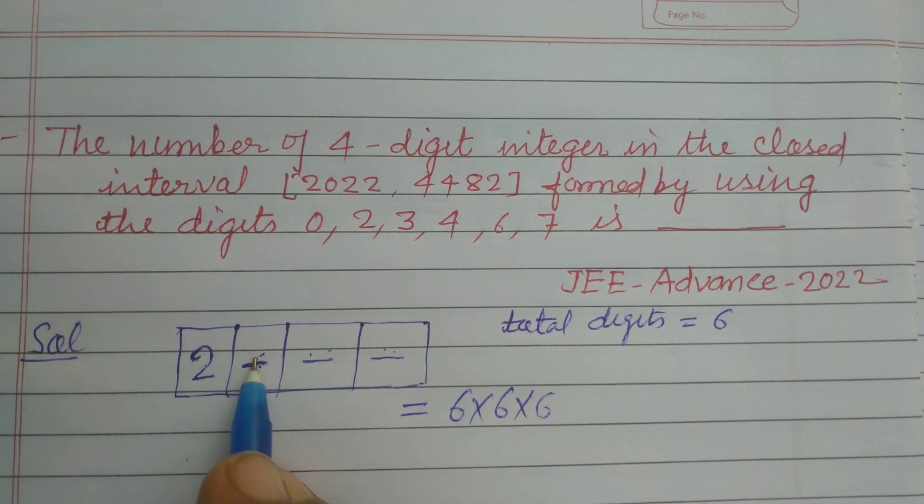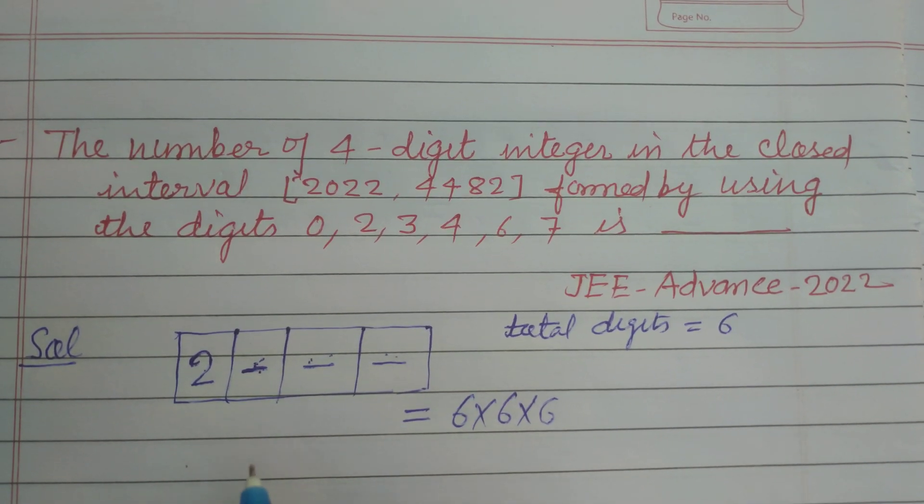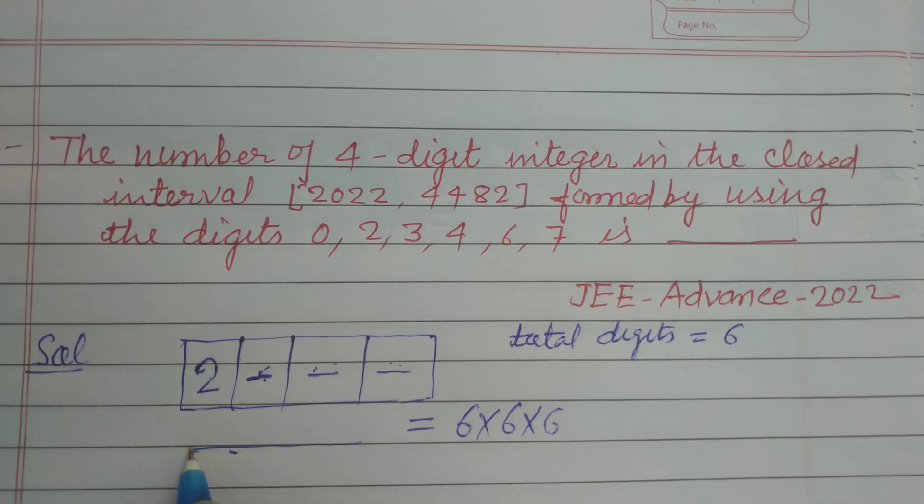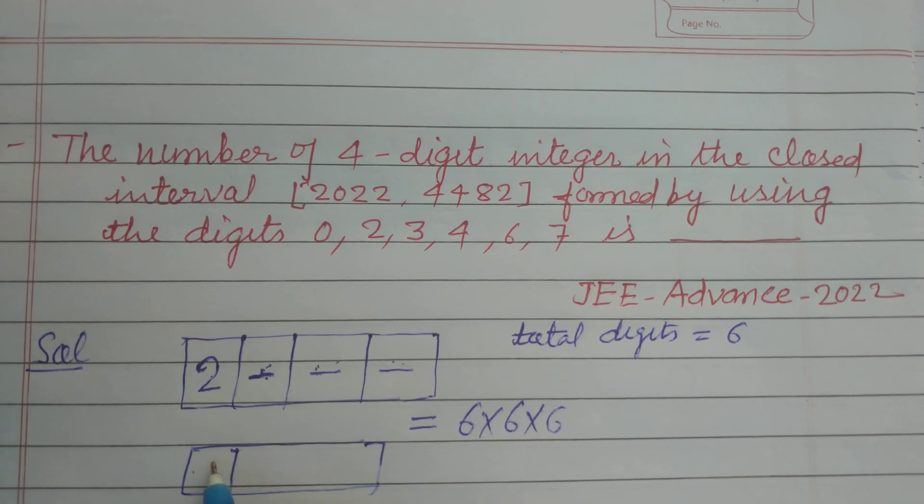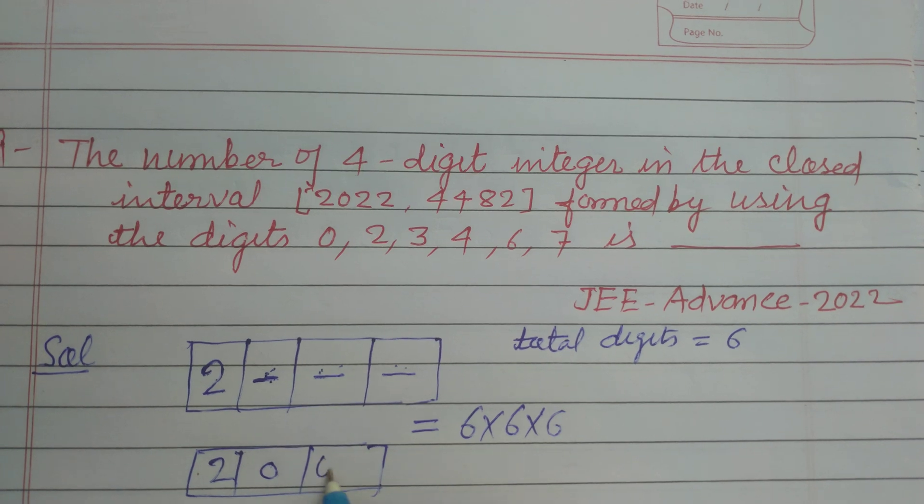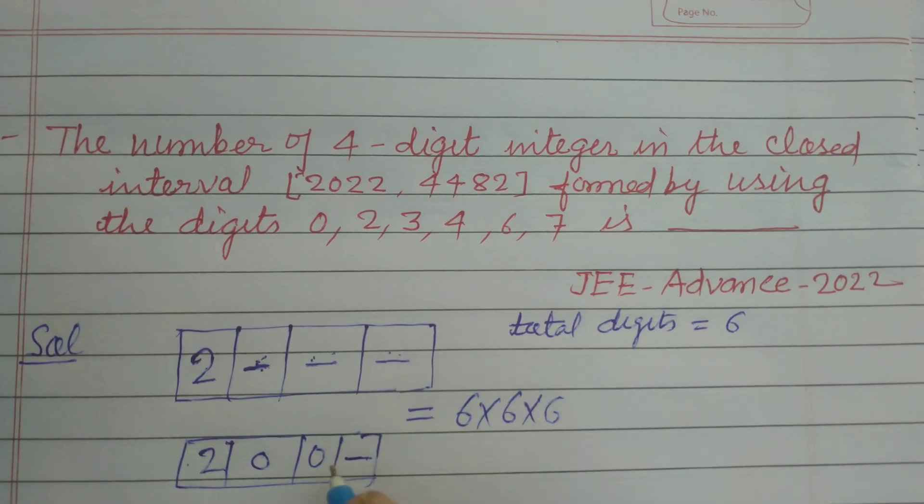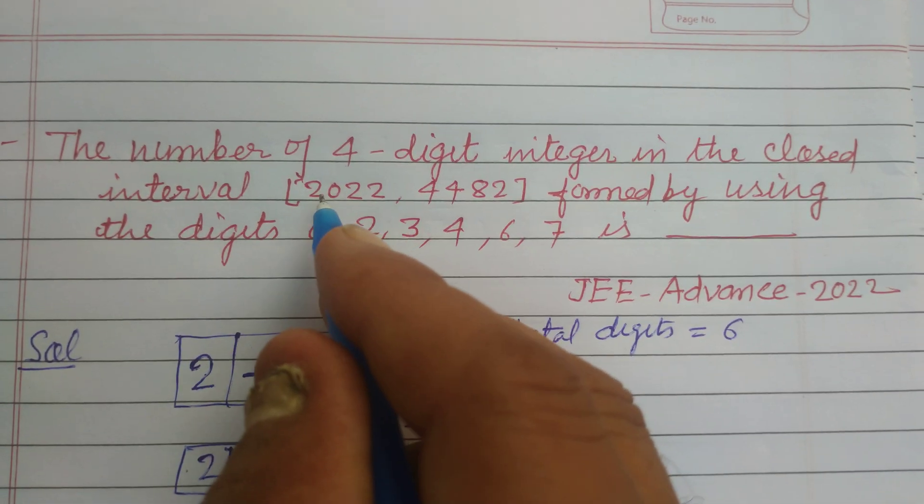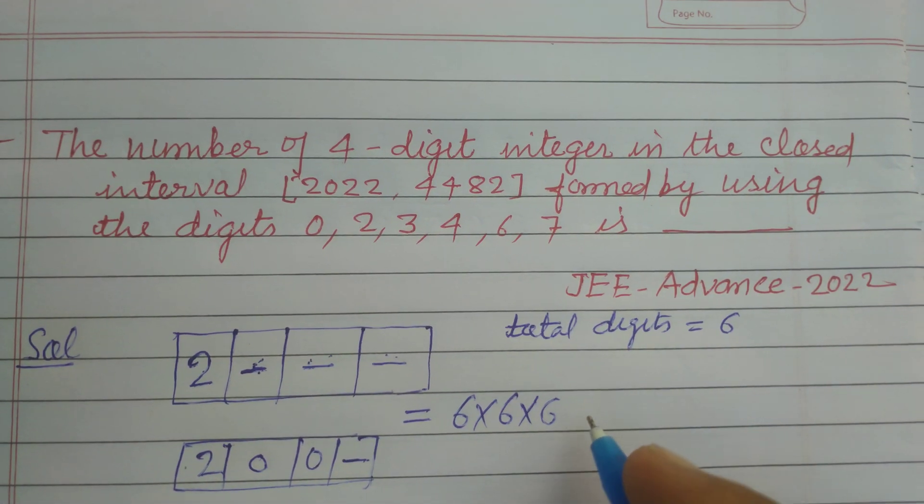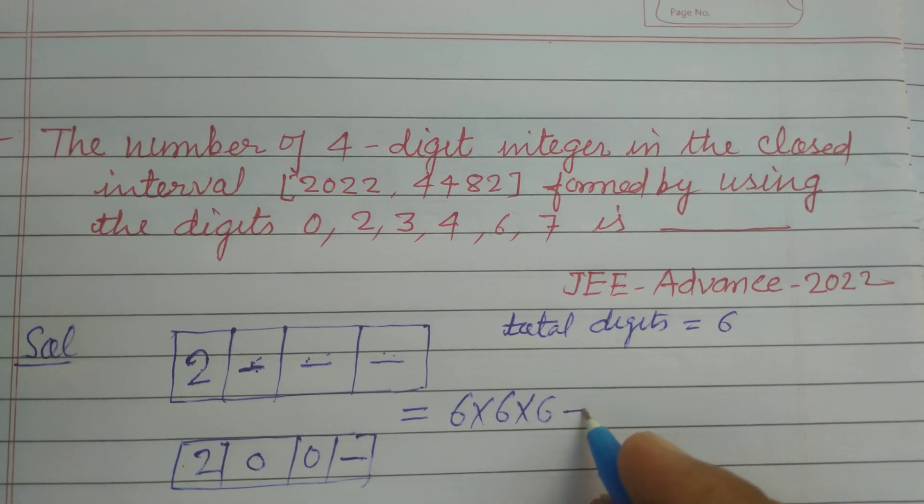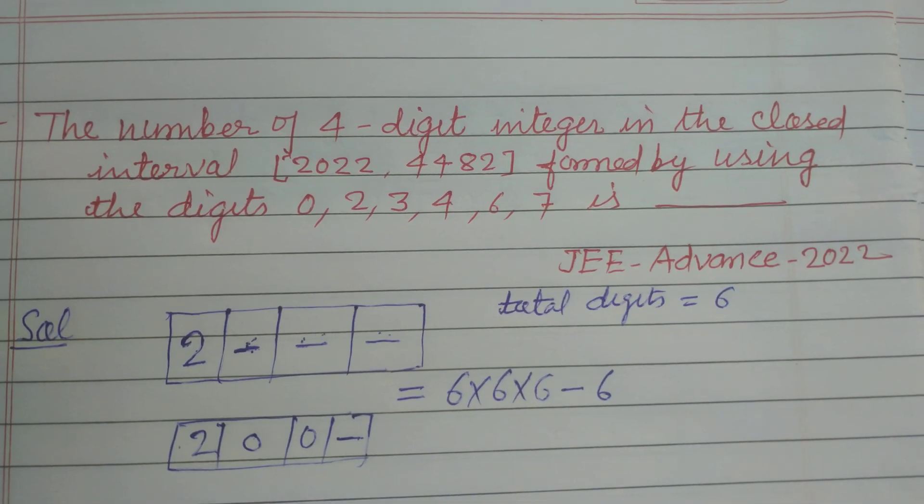But when we put here 0, 0, 0 here like this 2, 0, 0, then this one place can be filled by 6 ways. So this number does not come under this condition 2022. So we subtract these 6 numbers.